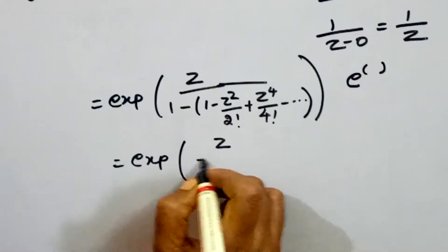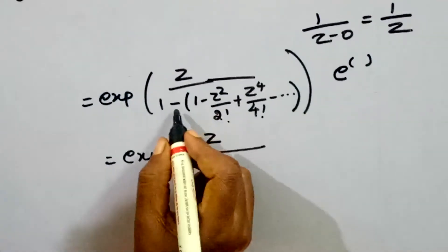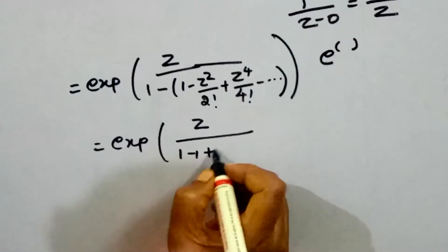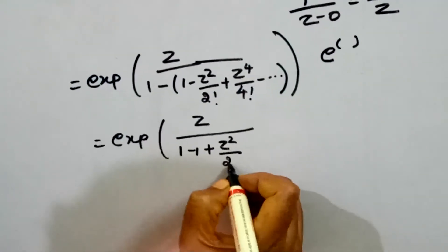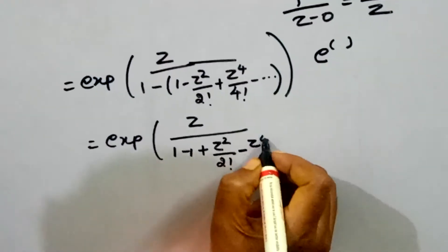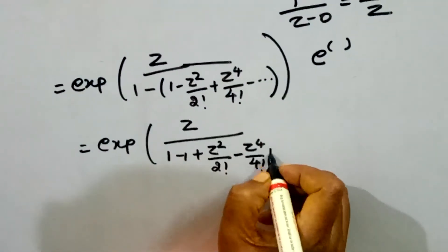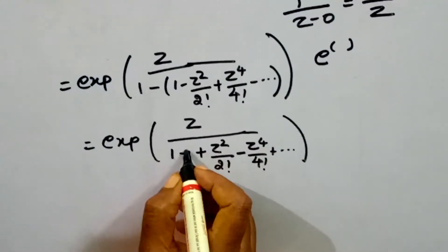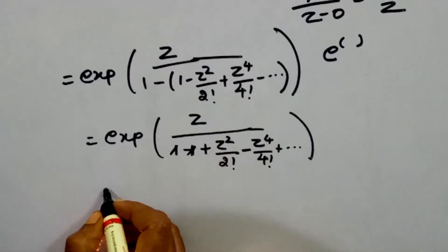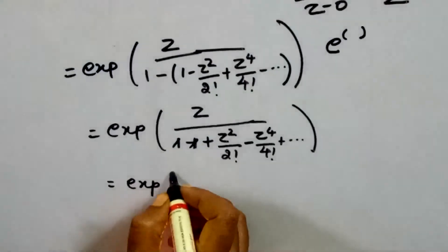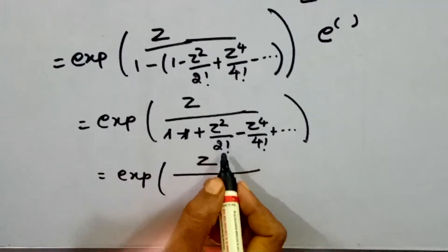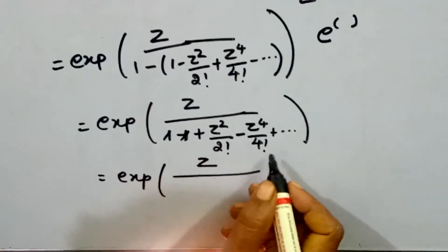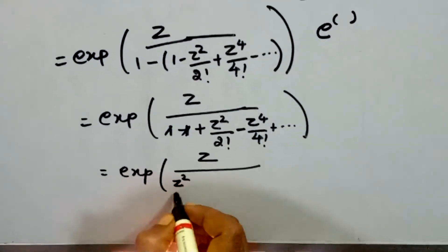So f of z equals exponential of z divided by the quantity z squared over 2 factorial minus z to the power 4 over 4 factorial plus and so on. Multiplying out the sign: first term is minus, second term is plus z squared over 2 factorial, third term is minus z to the power 4 over 4 factorial, and so on. We factor out z squared over 2 from the denominator.